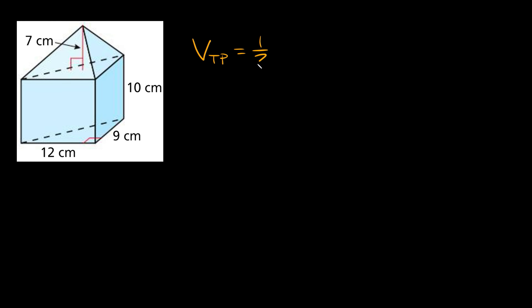Here's the next example. This time we have a triangular prism on the bottom, and on top we have a triangular pyramid. The first thing we can do is find the volume of the triangular prism on the bottom. The volume of a triangular prism is equal to one-half times the length times the width times the height. So here: one-half times 12 times 9 times 10. One-half times 12 is 6, 6 times 9 is 54, and 54 times 10 is 540.